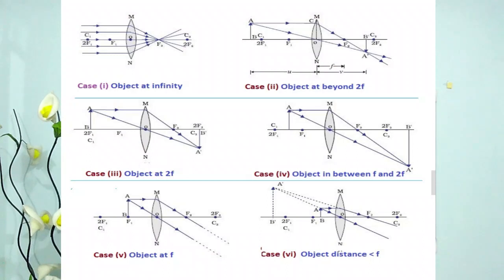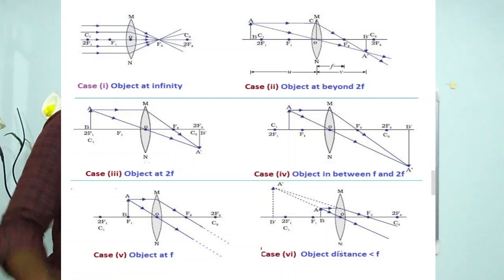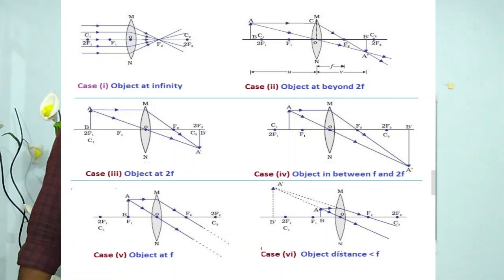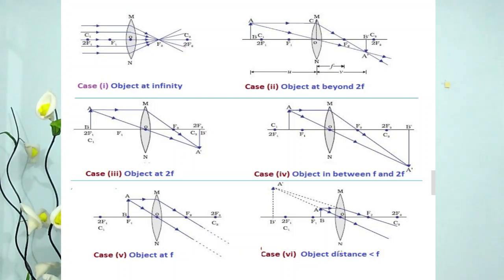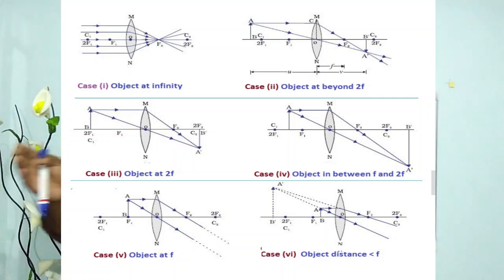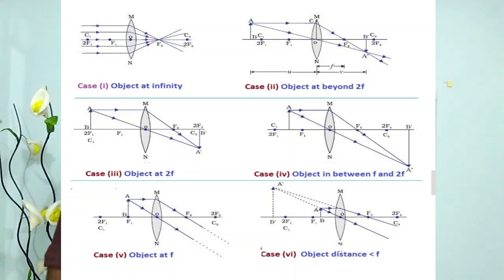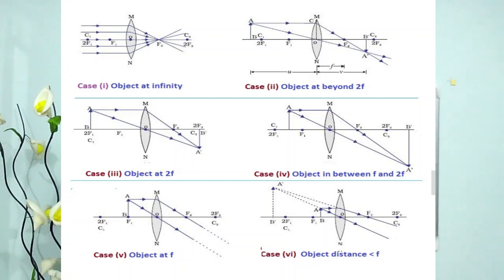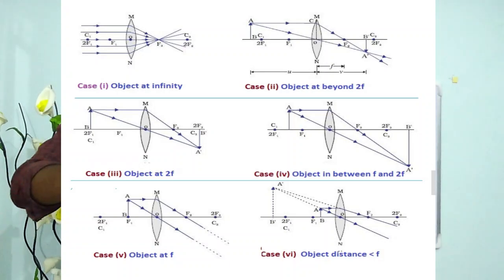On screen you can see figures showing image position for a convex (converging) lens. When the object is at infinity, the image forms at the focus on the other side of the lens. When the object is beyond C, the image forms between C and F — it is real and inverted. When the object is at C, the image forms at C on the other side.